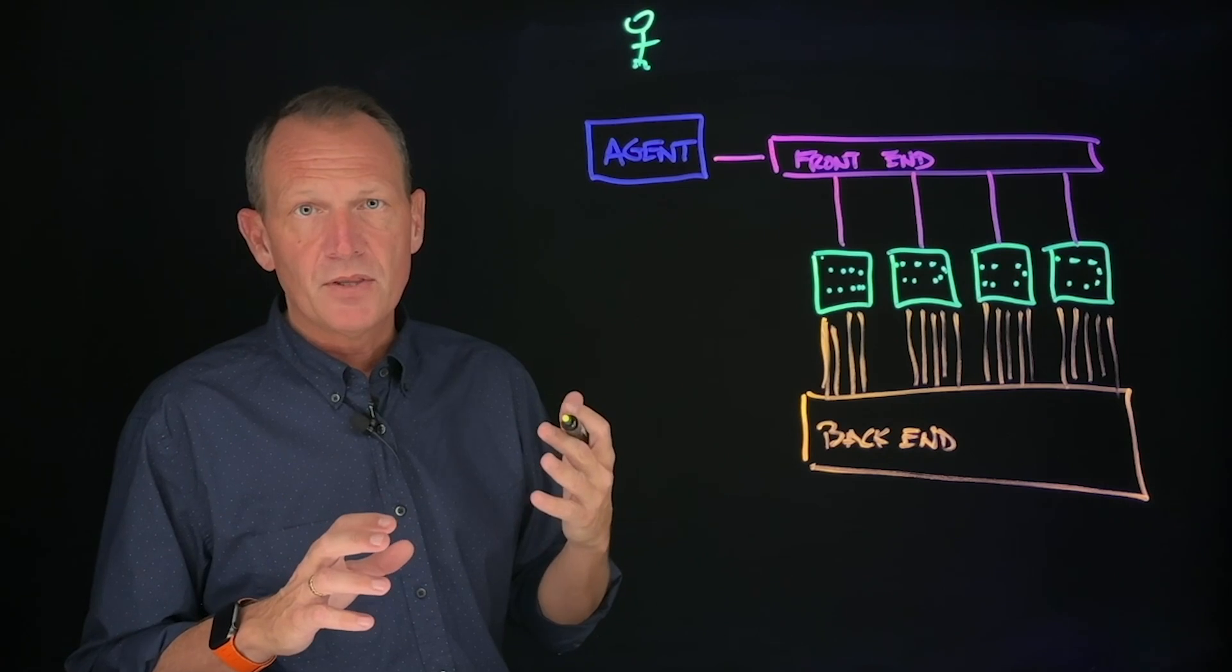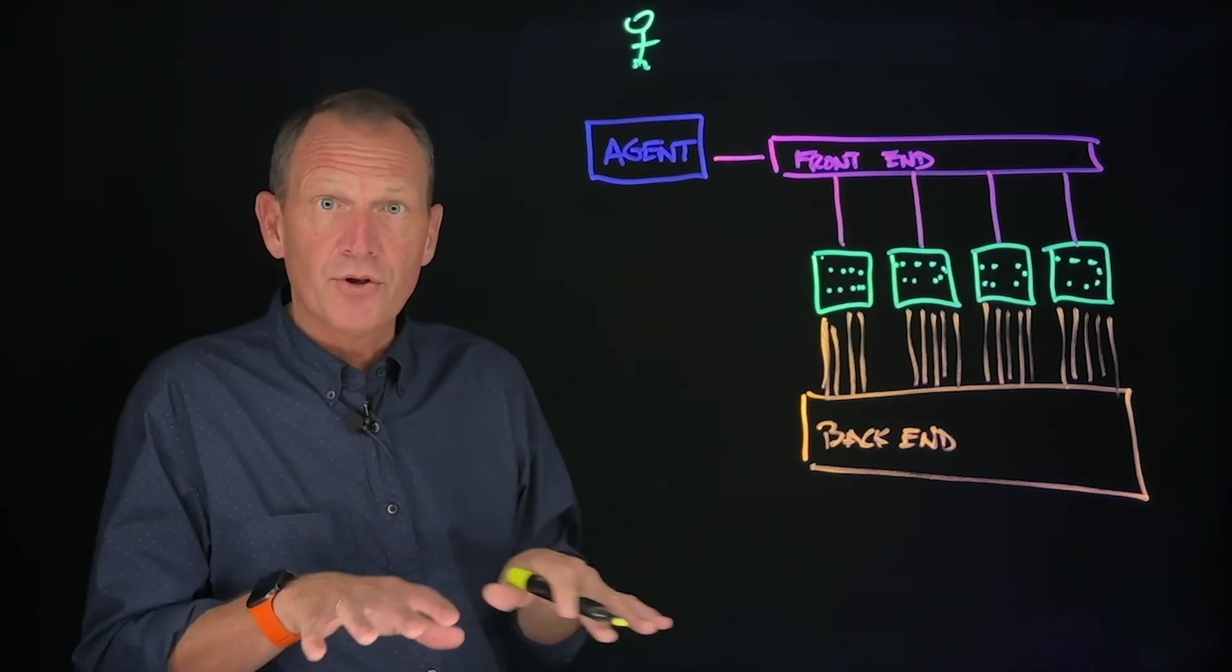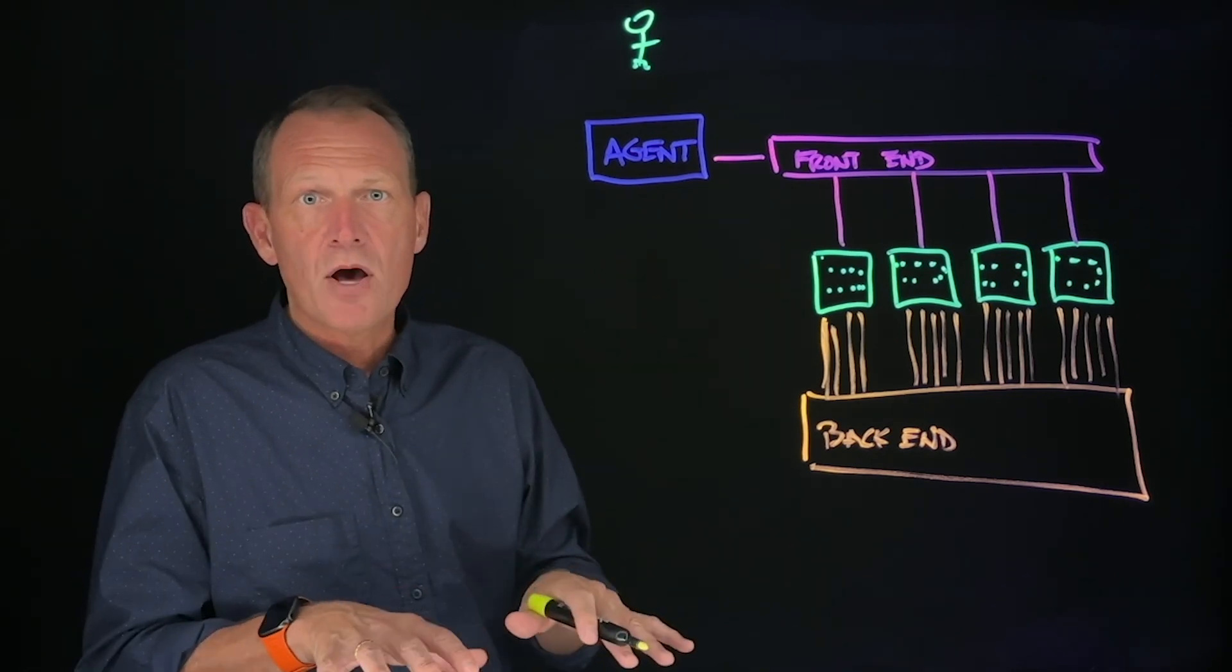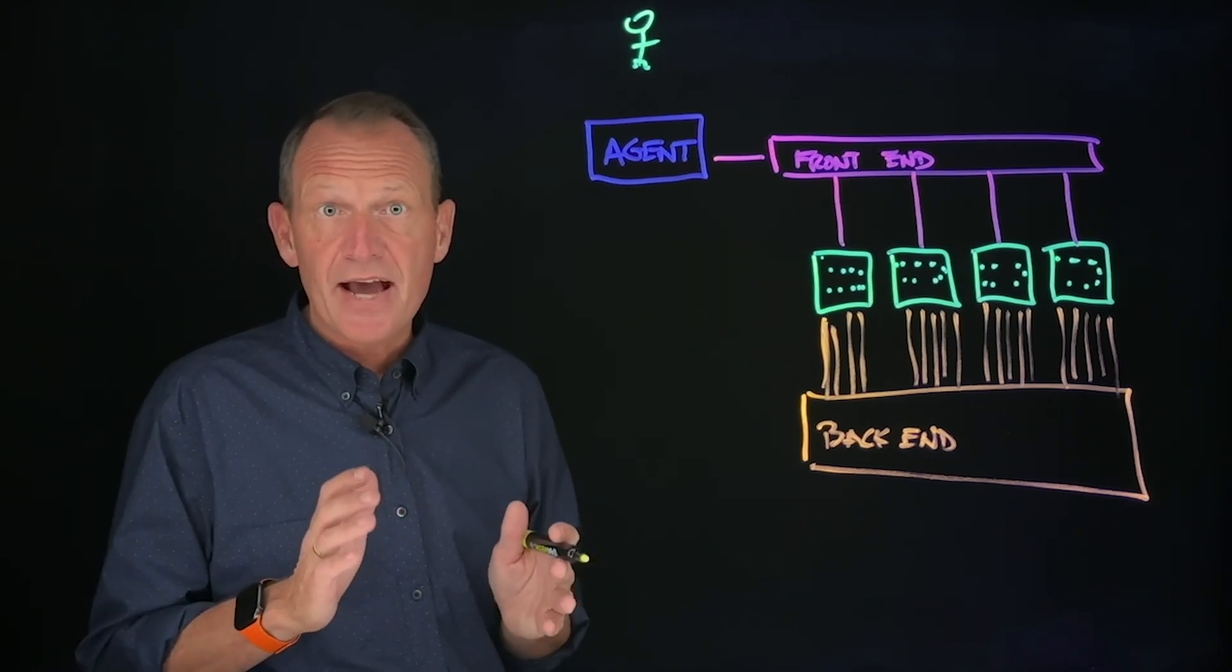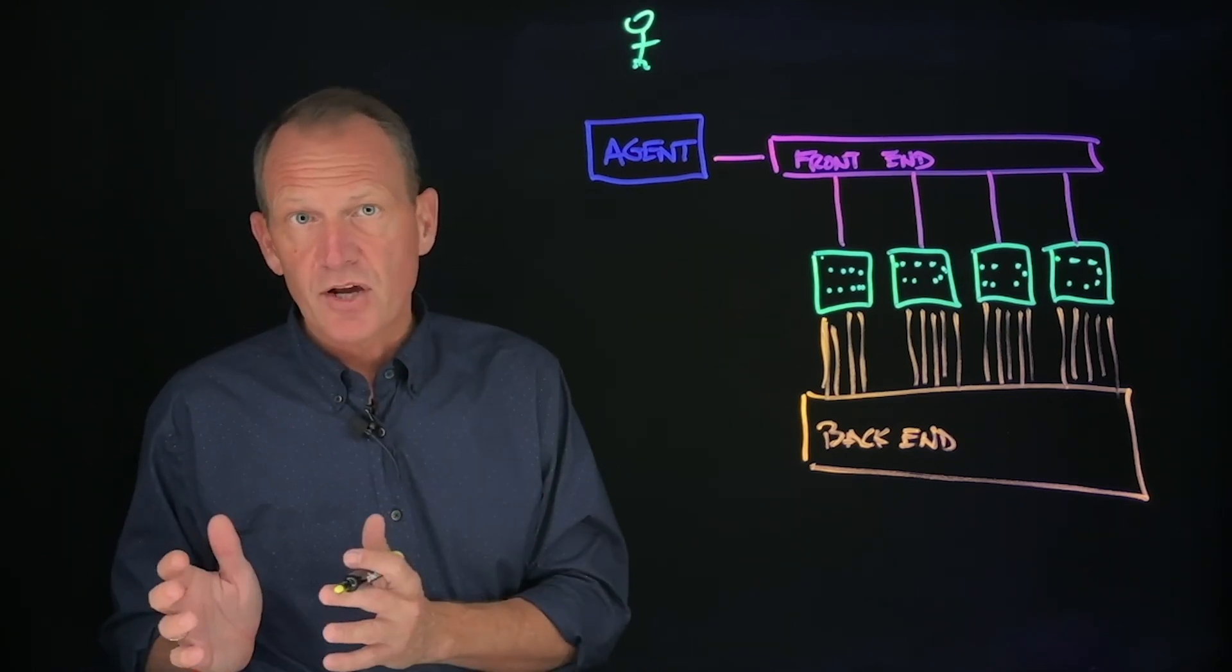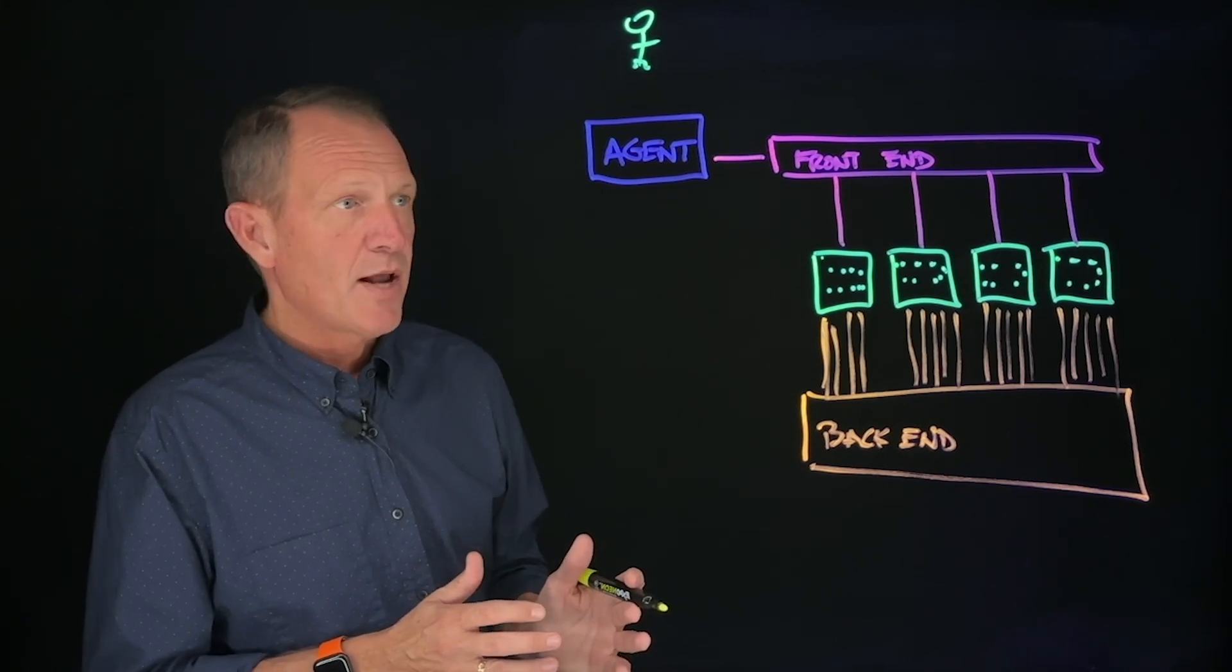The idea is we want to get the model started and activate that neural network, the weights in the model and how they relate to one another. We want to get it started in the right way. Again, using that Azure example, we want to understand that we're talking about Blue and not the Microsoft product.